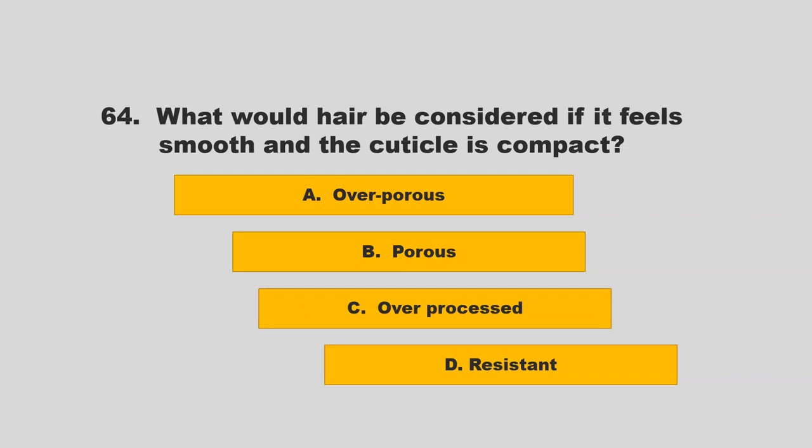What would hair be considered if it feels smooth and the cuticle is compact? Is it overporous, porous, overprocessed, or resistant? If you chose D, resistant, you are correct.